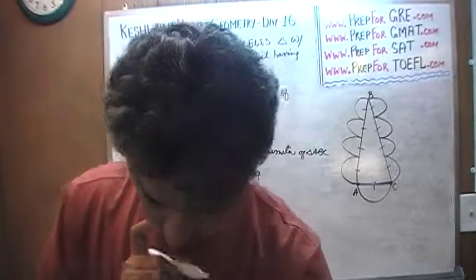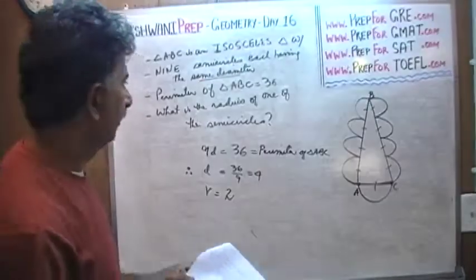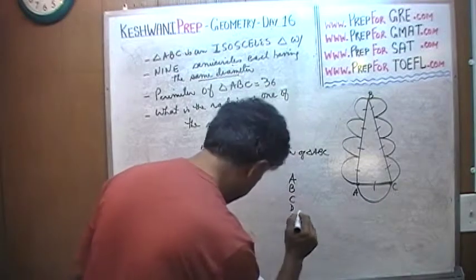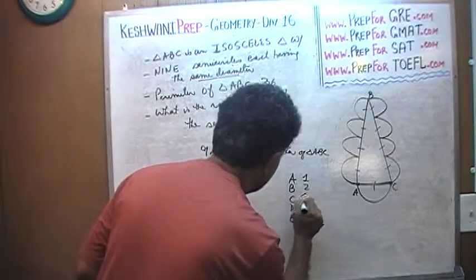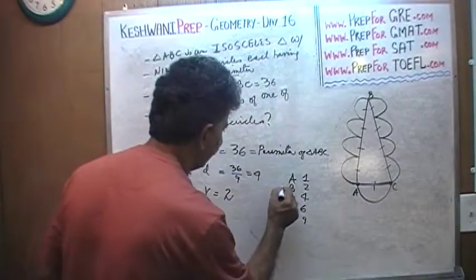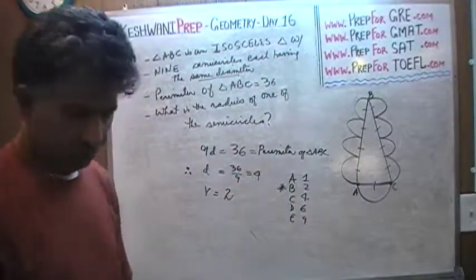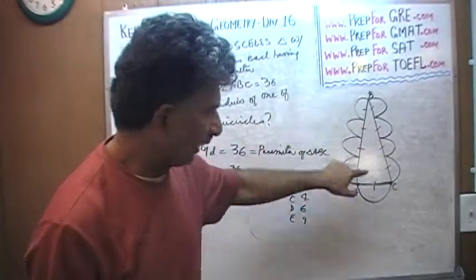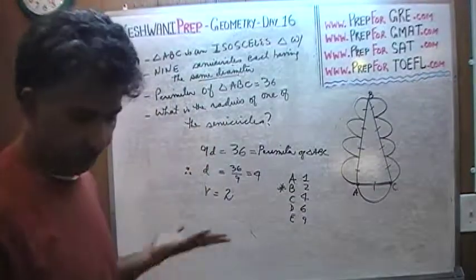I never gave you the answer choices, did I? It's a bit too late in the game to give you the answer choices. A, B, C, D, E: 1, 2, 4, 6, and 9. And of course, the radius is 2, which makes sense because if the radius is 2, then each of the diameters is 4, and there are 9 of them. 4 times 9 gives us the perimeter of 36. That's all. We are done.